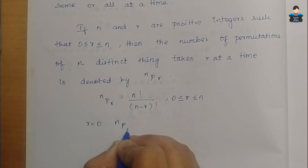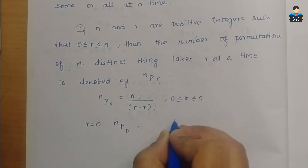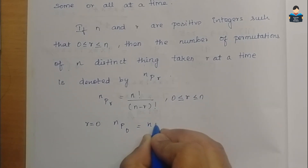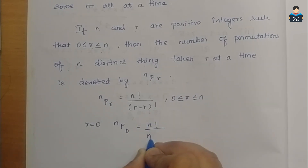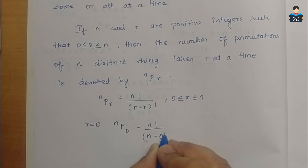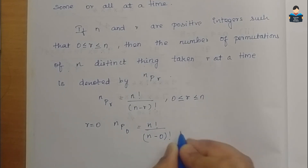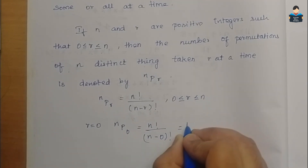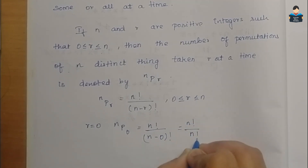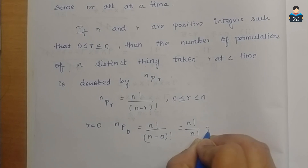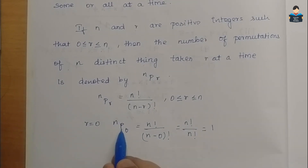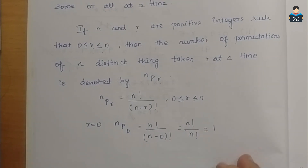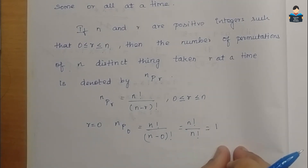What is n factorial by (n minus 0) factorial? That is n factorial by n factorial, which is 1. So nP0 is 1.